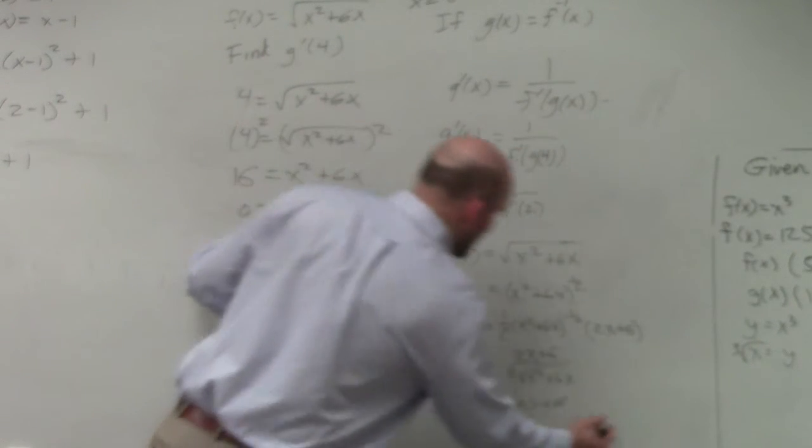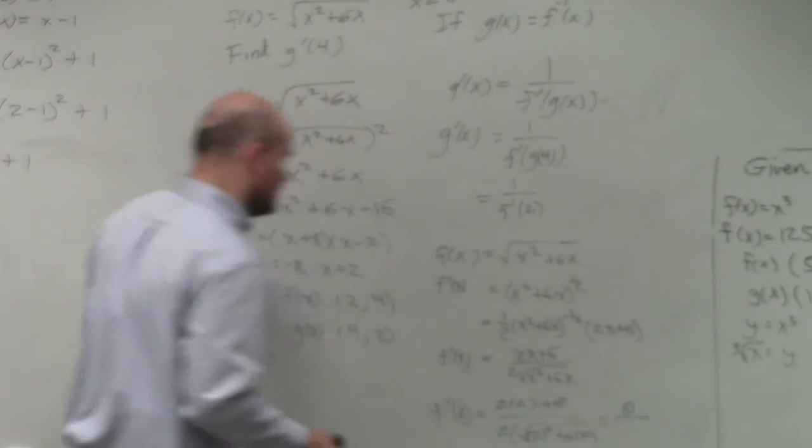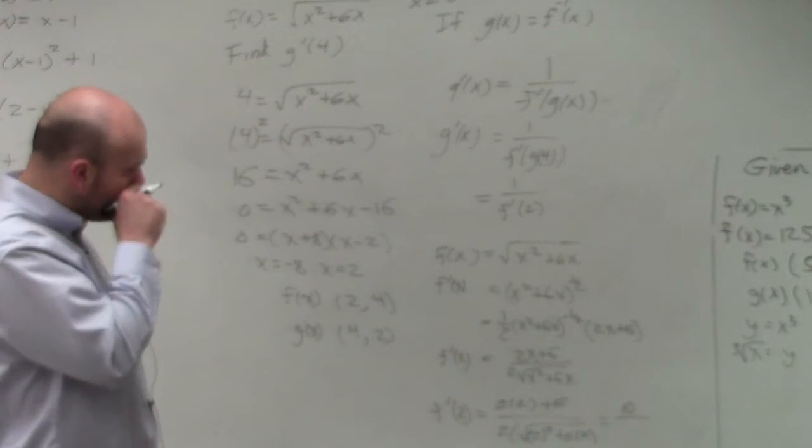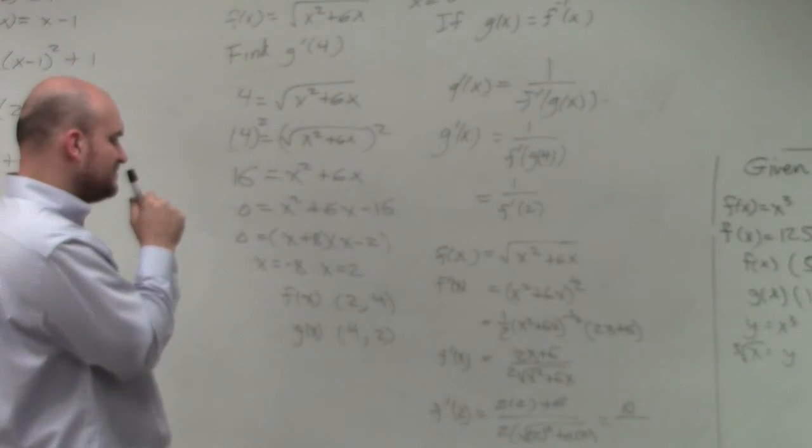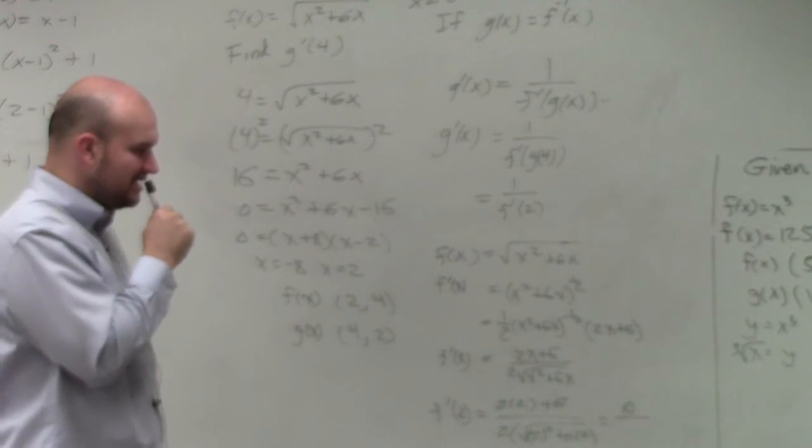So that's going to be 10 over 4, 16, 16. That's 12 plus 4. So that's going to be 16, square root of 16 is 4. 4 times 2 is going to be 8.